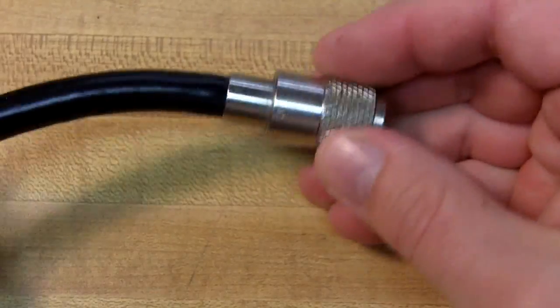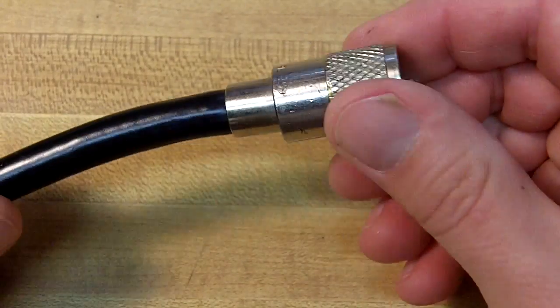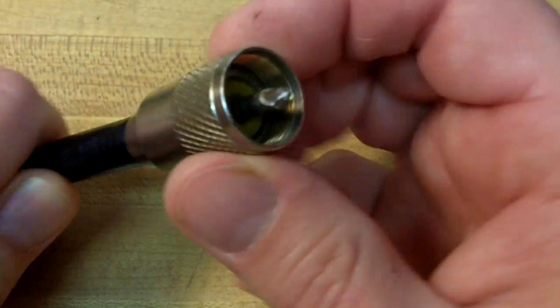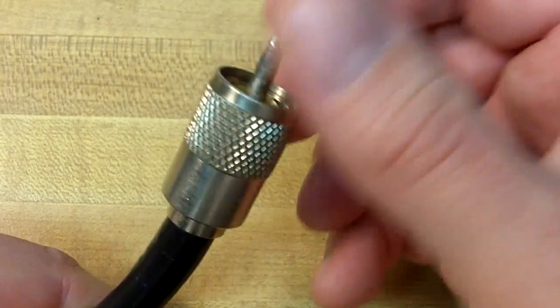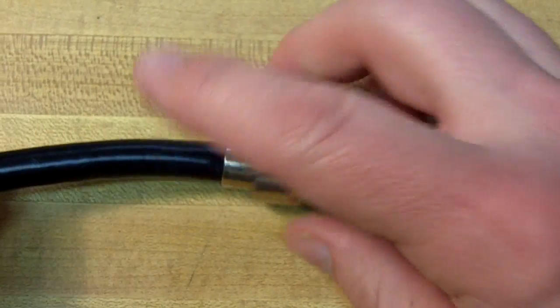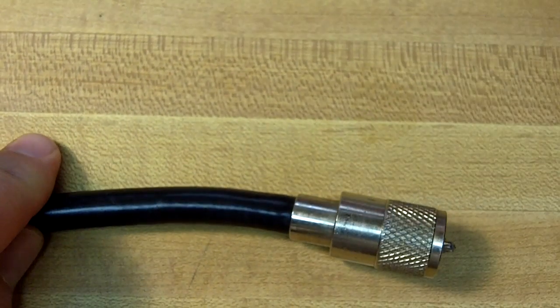I'll also show you one more thing here, a couple of connectors that are common in ham radio use. This is a PL259 connector. That's what they look like. You've probably seen them before.